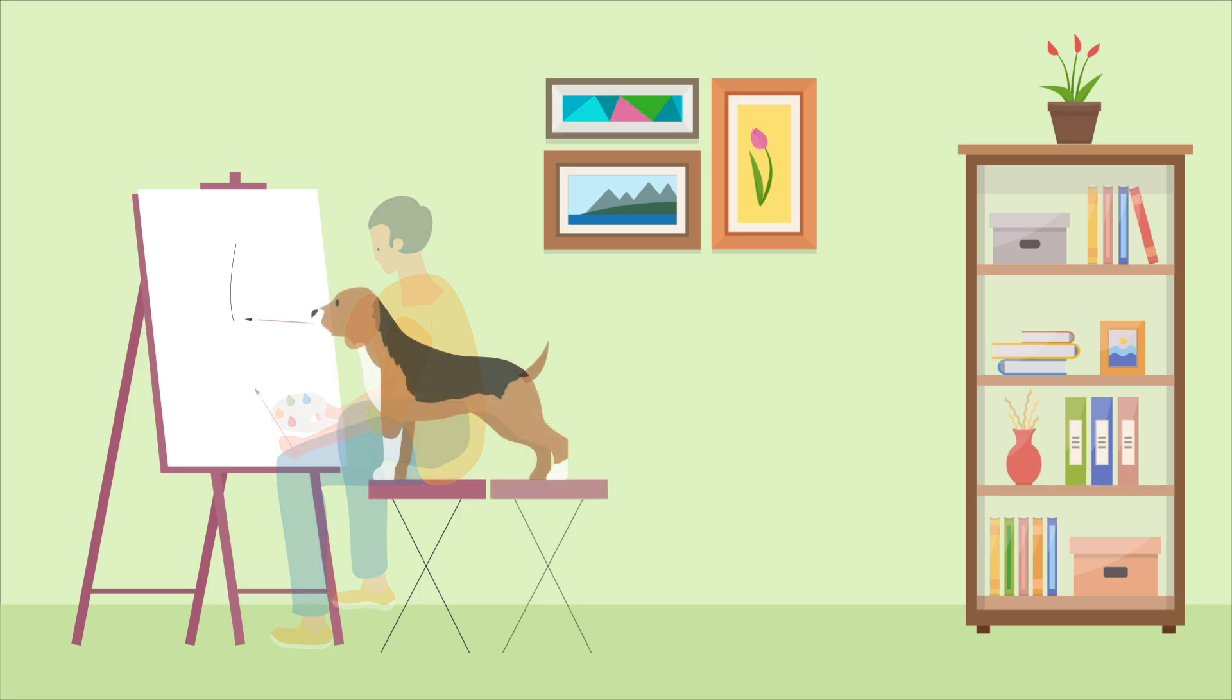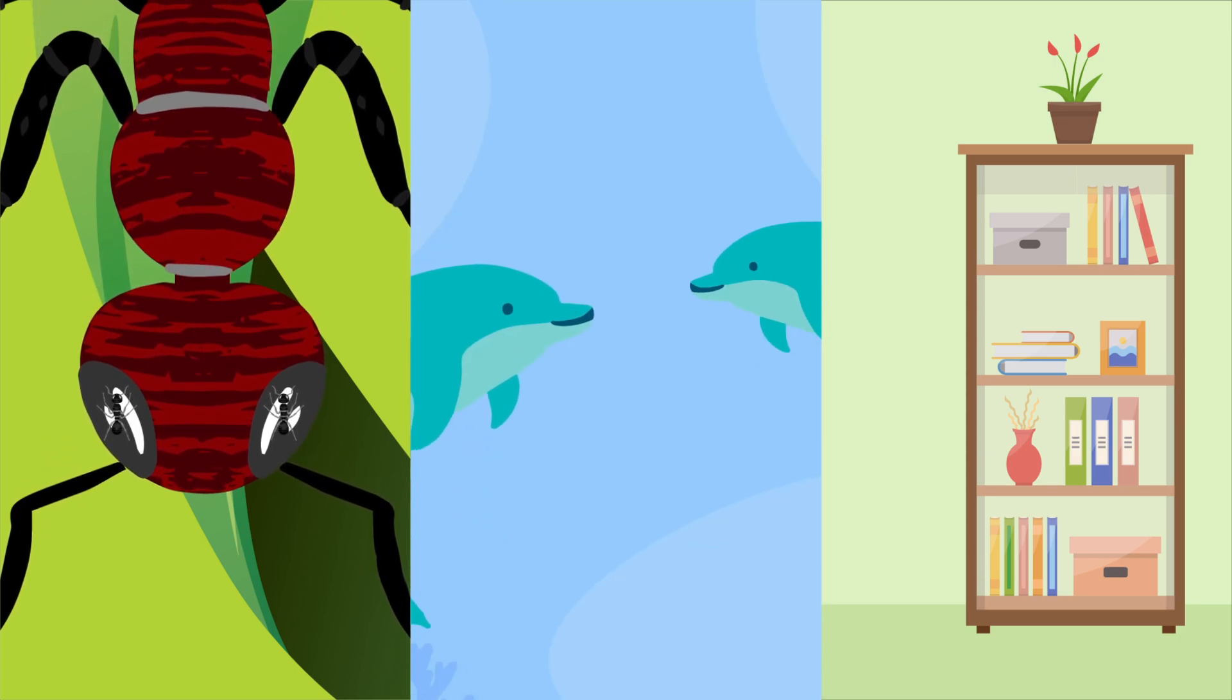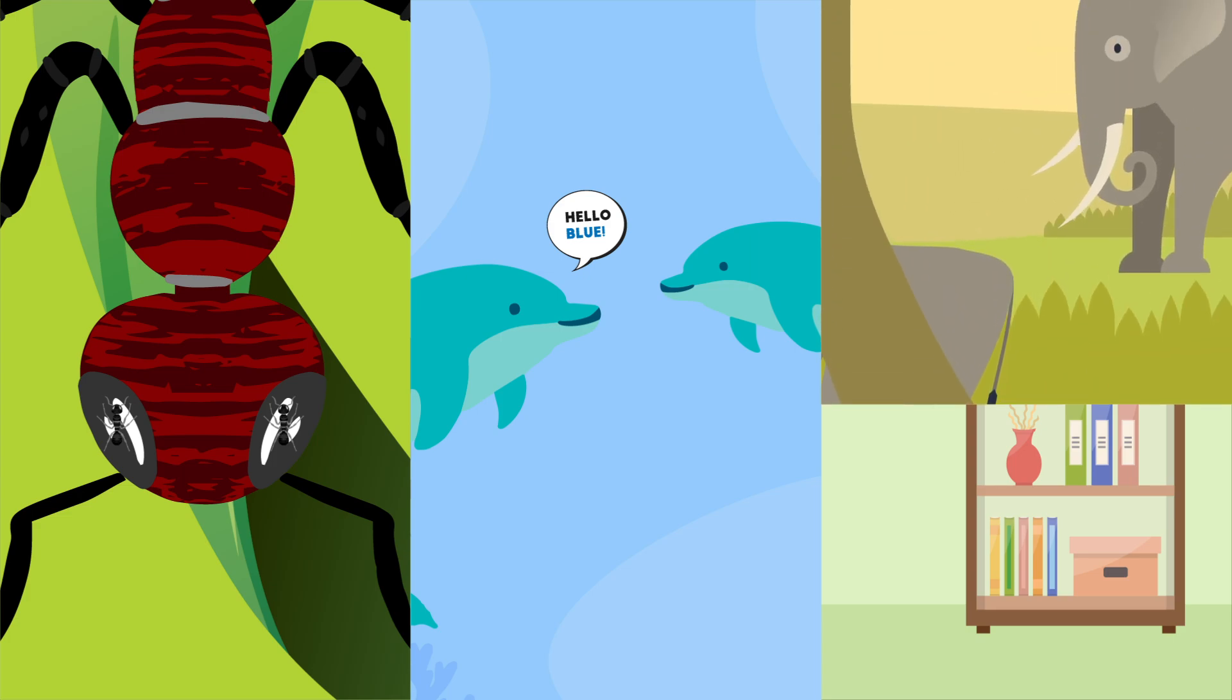But what if I tell you that animals are like us and can do all that we can do? We know now that insects can recognize faces, dolphins give names to each other and elephants even mourn their loved ones after their death. But how are animals more intelligent than we think?